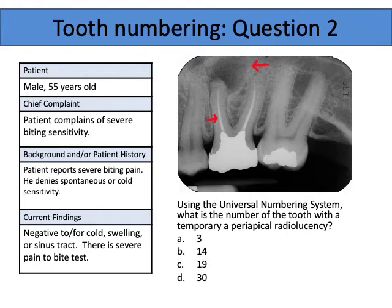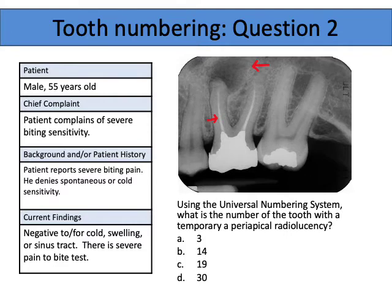This one is symptomatic apical periodontitis because it hurts to bite. The previous case was asymptomatic apical periodontitis. We know there was inflammation at the apex — hence apical periodontitis. This one is symptomatic; case one was asymptomatic. Patient denies spontaneous or cold sensitivity. Well, there's no vital pulp tissue because the tooth has had a root canal, so we would not expect cold sensitivity. Current findings: negative to cold, no swelling or sinus tract. A sinus tract is basically a pimple on the gingiva, which gives a release for any pus that builds up.